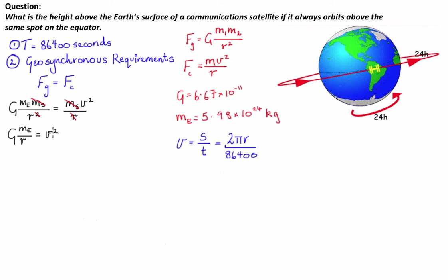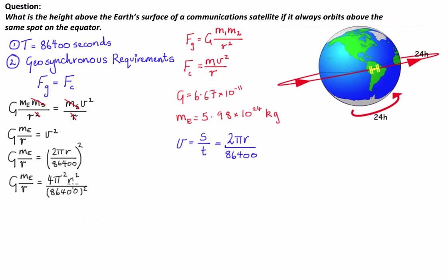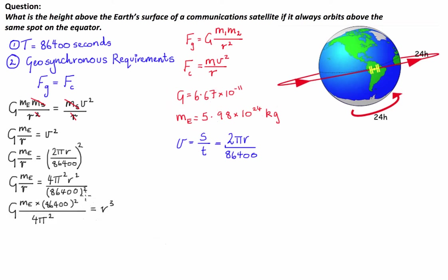Let's input this into our simplified formula. Taking the squared outside the bracket inside using index law, 2 squared is 4, pi squared is pi squared, R squared is R squared, and I'll keep 86,400 squared as-is. Now I'll take all unknown values to the right-hand side and all known values to the left, substituting in: 86,400 squared and 4 pi squared go to the left, and the radius in the denominator on the left moves to the right.